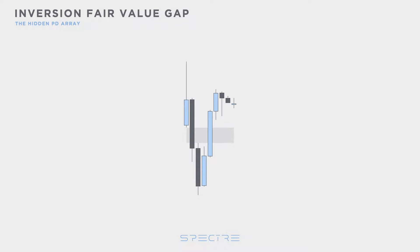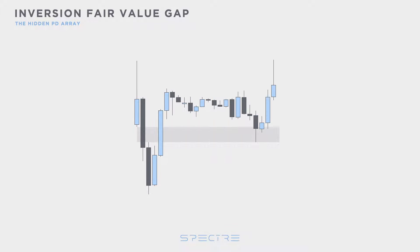However, sometimes you don't get that. Instead, price would disrespect this fair value gap with a full body closure and reverse from here. This is where you would get your Inversion Fair Value Gap. You can use this inversion level for your retracement and entries to continue price higher.